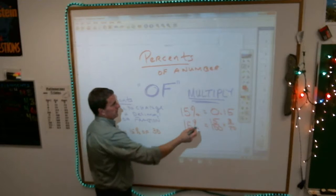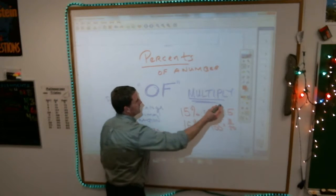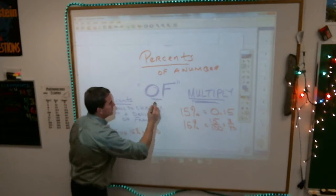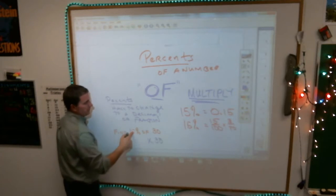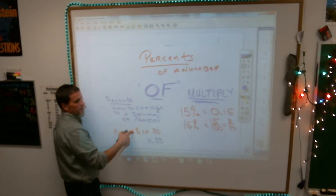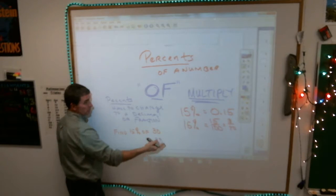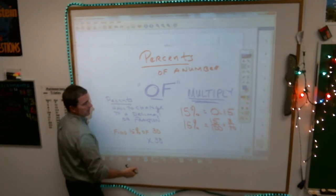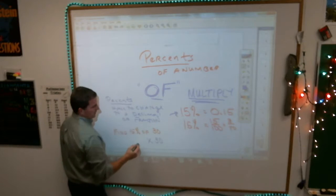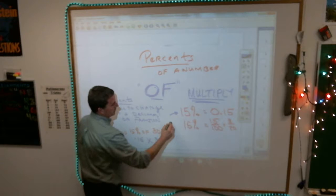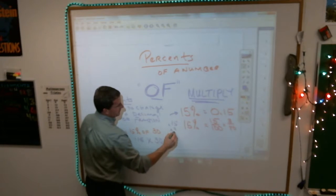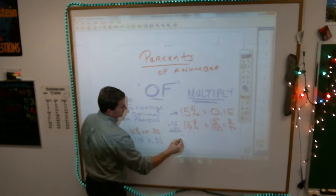But the first thing you know is that the word of means you're going to multiply, so you are going to multiply whichever way you choose to change percent into a decimal or fraction by 30. We'll do it both ways just so you can see. Let's do a decimal first. If I make this 0.15,